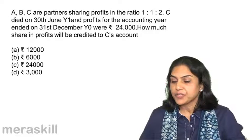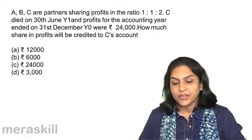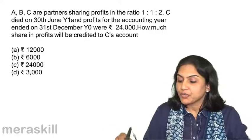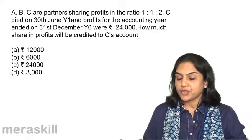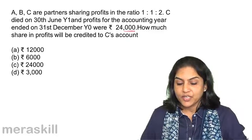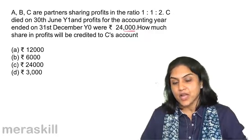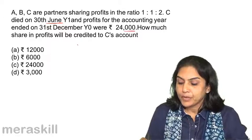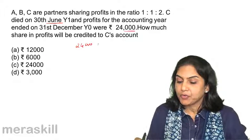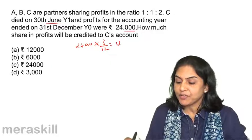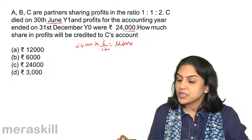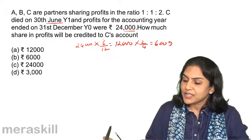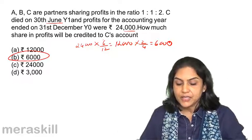A, B, and C are partners sharing profits in the ratio 1:1:2. C died on 30th June of year 1 and profits for the accounting year ended on 31st December of the previous year were 24,000. How much share in profits will be credited to C's account? Options: A, 12,000; B, 6,000; C, 24,000; D, 3,000. Profit for current year: 24,000 into 6 by 12, that is half, equals 12,000. C's share is 12,000 into 2 by 4, therefore his share of profits should be 6,000. Correct answer is option B.